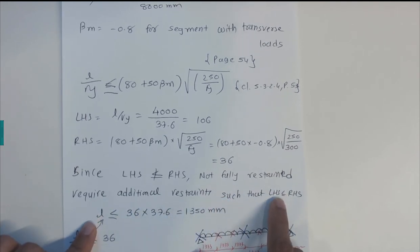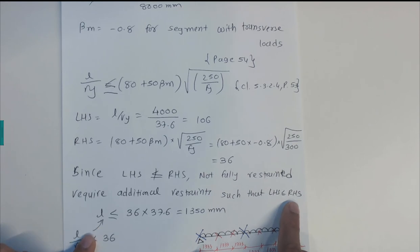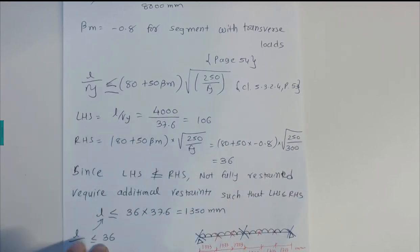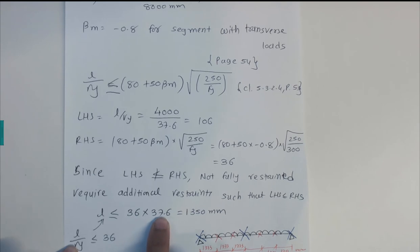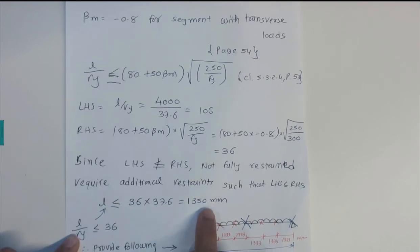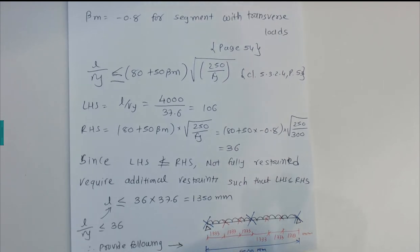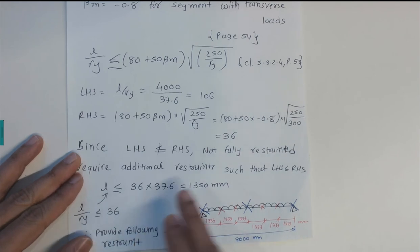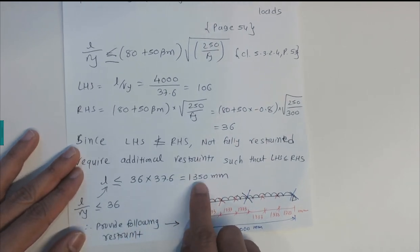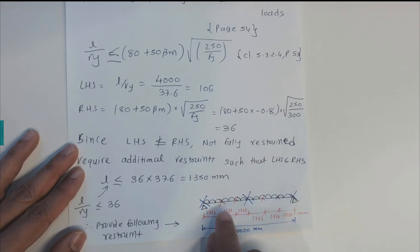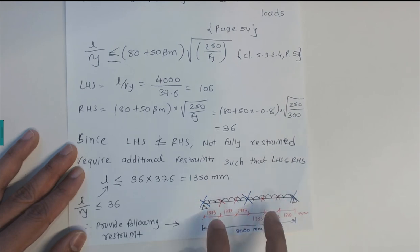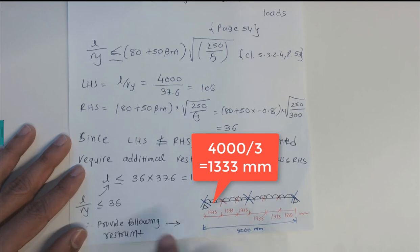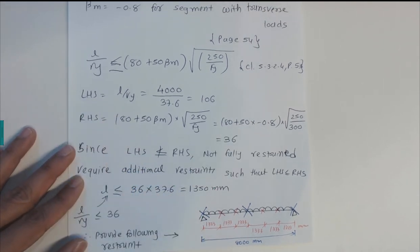To satisfy L/ry ≤ 36, the maximum allowable segment length is L = 36 × ry = 36 × 37.6 = 1350 mm. Therefore, bracing must be provided at intervals of 1350 mm or less. By providing two additional intermediate bracings, the beam satisfies the fully restrained condition, with the left-hand side less than or equal to the right-hand side.